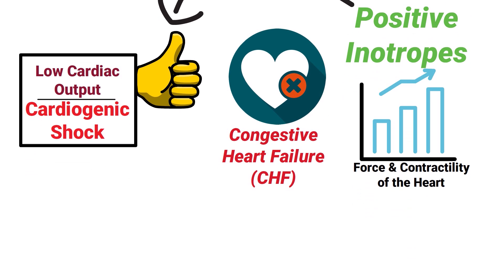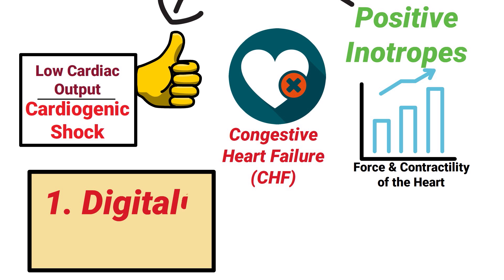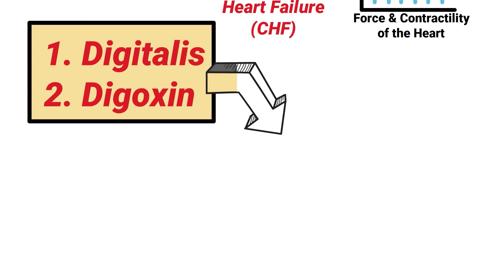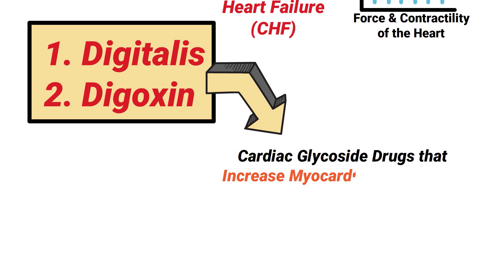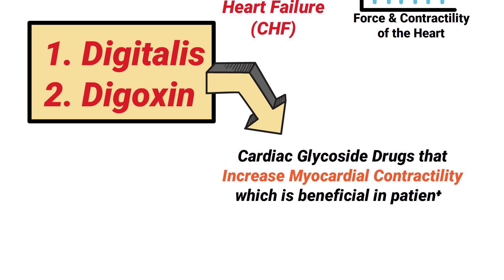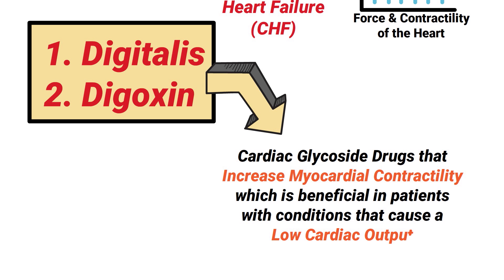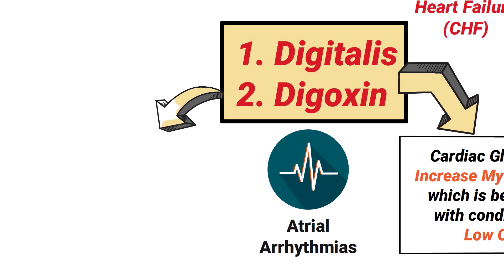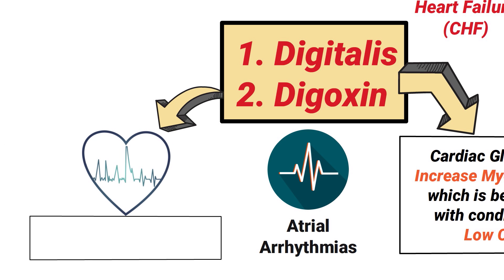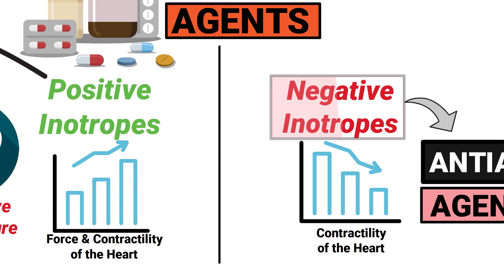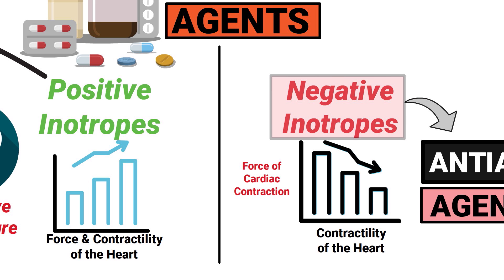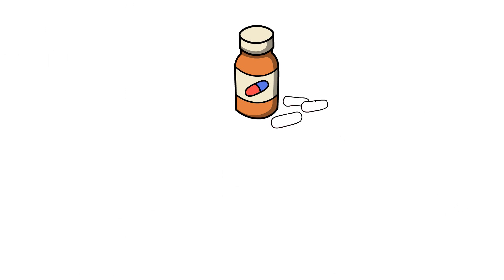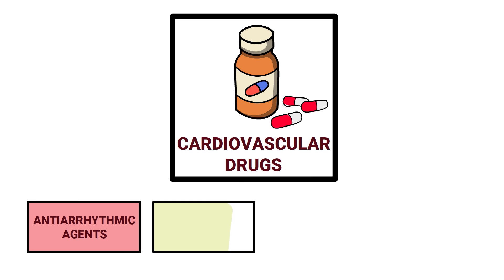Some examples of the most common types of positive inotropic agents include digitalis or digoxin. These are cardiac glycoside drugs that increase myocardial contractility, which is beneficial in patients with conditions that cause a low cardiac output. They are also useful in treating atrial arrhythmias. Additionally, digoxin may be indicated for the treatment of fetal supraventricular tachycardia. As a reminder, negative inotropic agents have the opposite effect and work by decreasing the force of cardiac contraction.